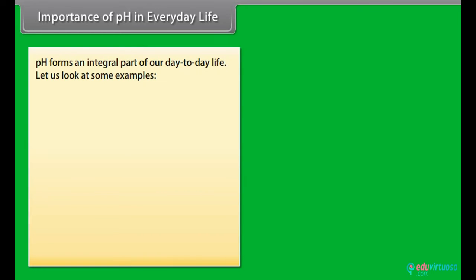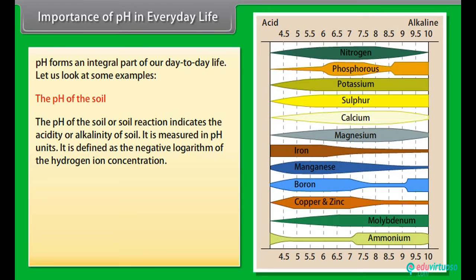Importance of pH in everyday life. Let us look at some examples from our day-to-day life where pH forms an integral part. The pH of the soil. The pH of the soil or soil reaction indicates the acidity or alkalinity of soil. It is measured in pH units. It is defined as the negative logarithm of the hydrogen ion concentration. With the increase in the amount of hydrogen ions in the soil, the soil pH also increases, leading to being more acidic.